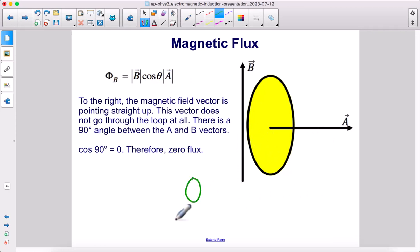If you have a loop, but then your magnetic field is parallel to the loop and not perpendicular, none of the lines, the field lines, are going to go through the loop. Therefore, 0 flux.